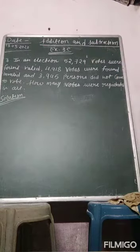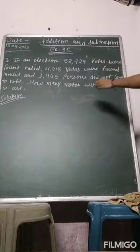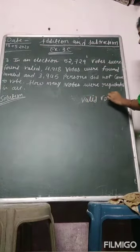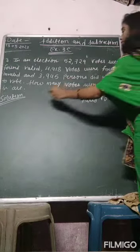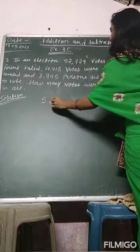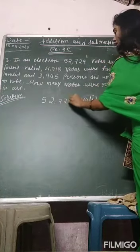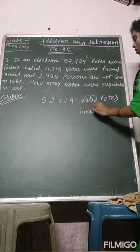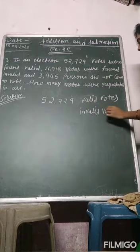So we write the statement. First, we will write valid votes, 52,729. Then invalid votes,